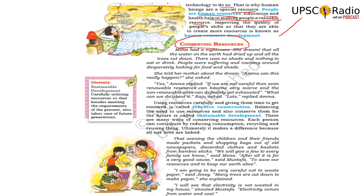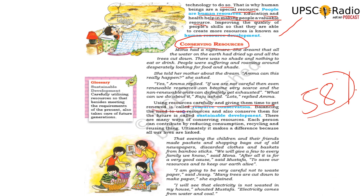Conserving resources is very, very important. It is not enough just to have resources or just to use them — we must conserve resources for future generations. For example, coal was used heavily during World War 1 and World War 2. Right now India has 58% coal remaining. We have to take certain resources and give them to our next generation. Using resources carefully and giving them time to get renewed is called resource conservation.